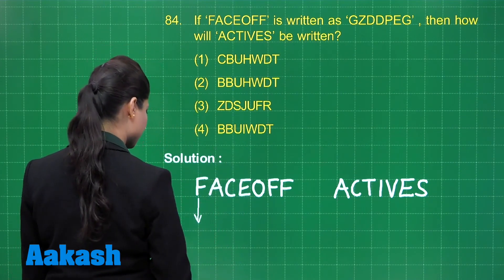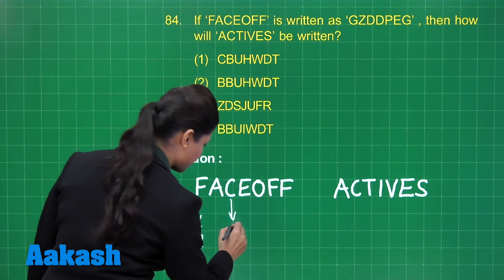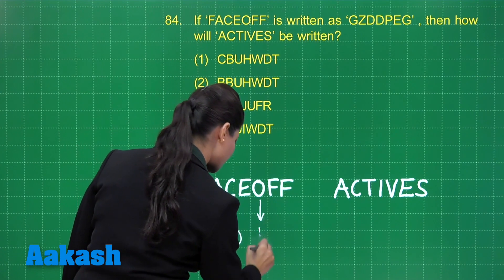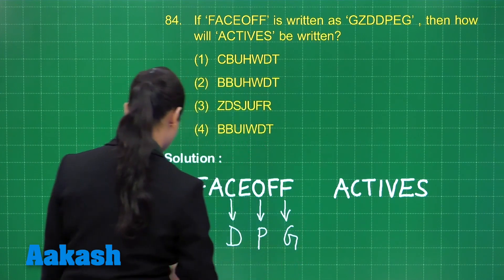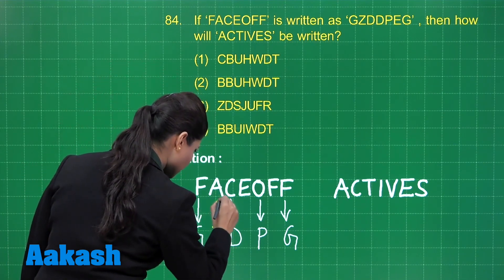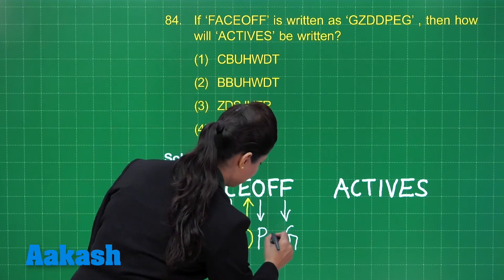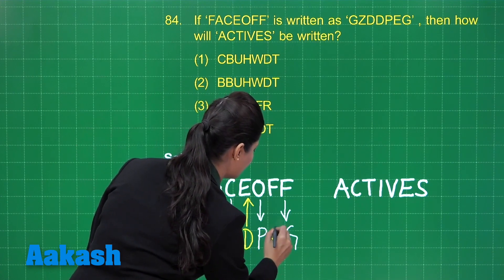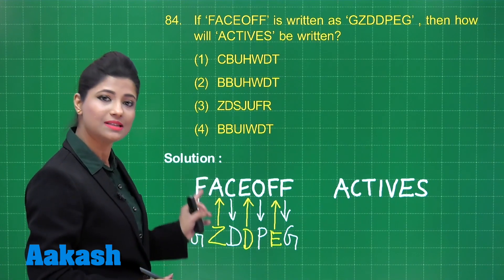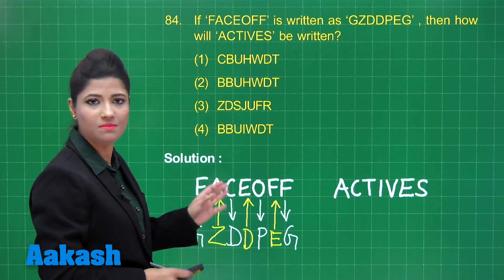When you go one alphabet ahead from F, you reach G. Similarly, going one ahead from C gives D, O is followed by P, and F is followed by G. Then Z is followed by A, D is followed by E, and E is followed by F. So the pattern is: first one alphabet position ahead, then one alphabet position backward — alternating plus 1 and minus 1.